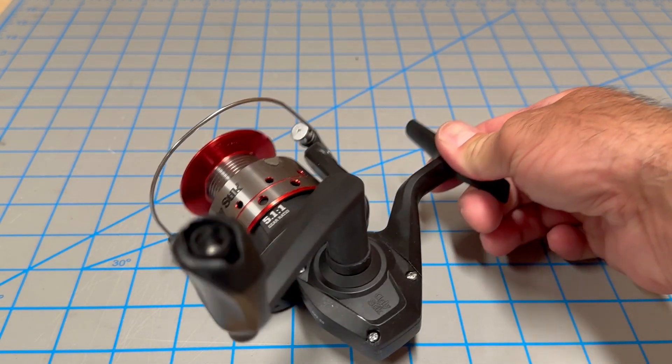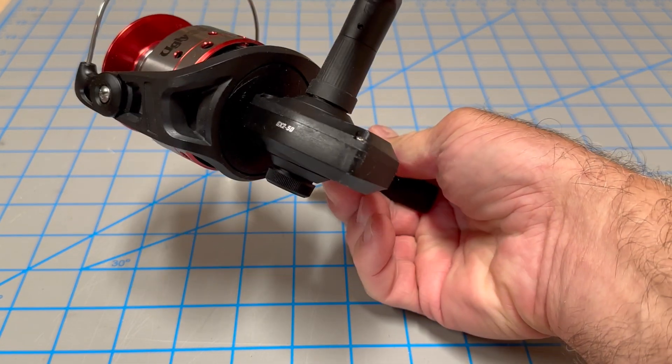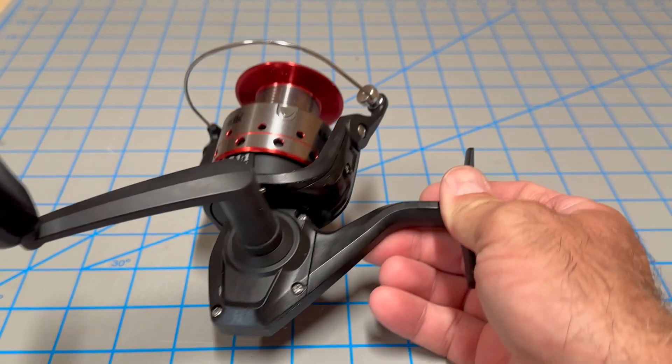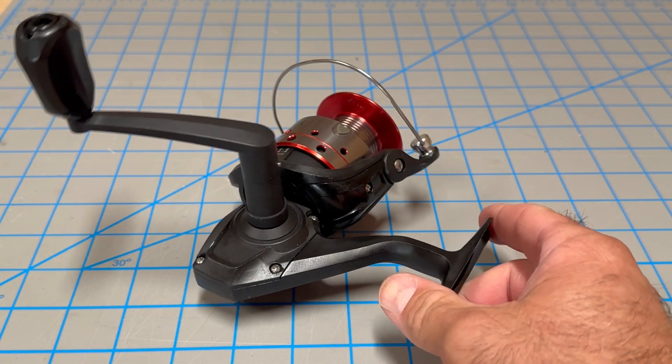Let's take apart an inexpensive fishing reel. This is an Ugly Stick GX2 50 series reel. Let's just take it apart and see what's inside of it.